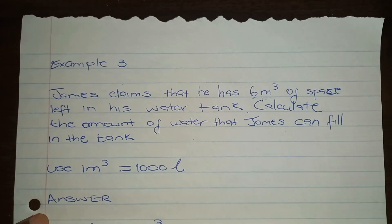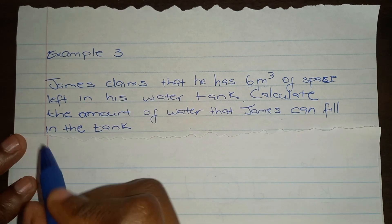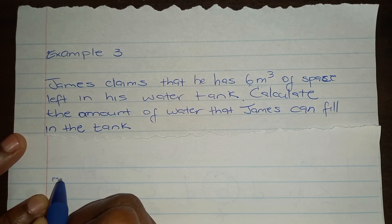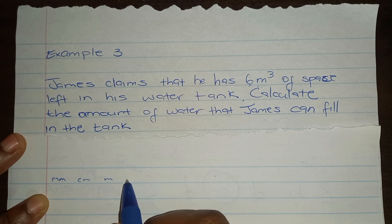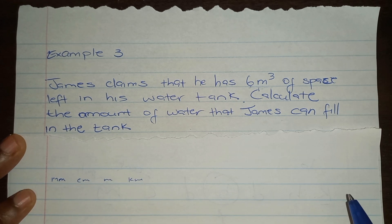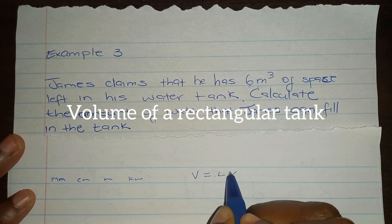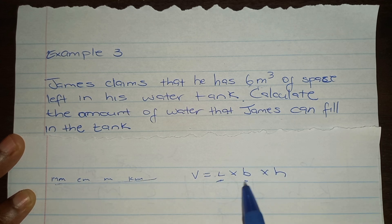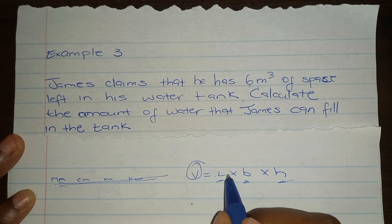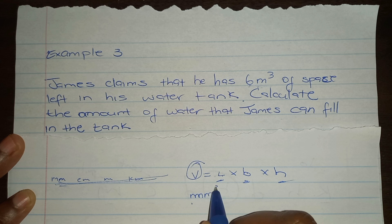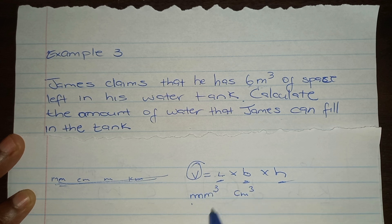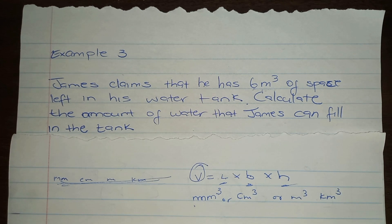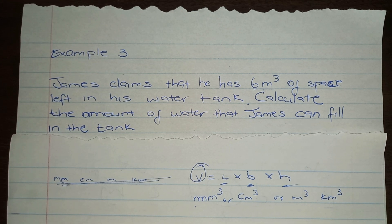Before we continue, let's talk about units of measurement. Distance or length can be measured in millimeters, centimeters, meters, or kilometers. Now we're going to talk about volume, which is length times breadth times height. Each dimension can be measured in any of those units. Once you get volume, the unit of measurement is then millimeter cubed, centimeter cubed, meter cubed, or kilometer cubed — whichever way you prefer.